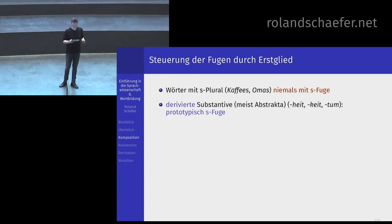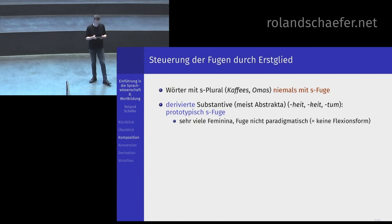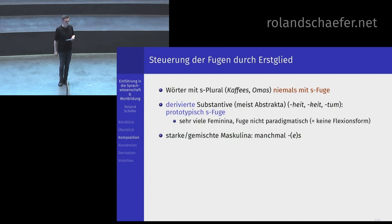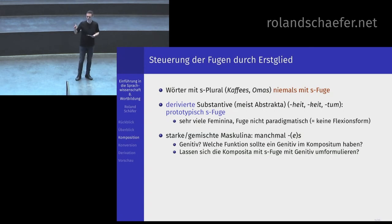Derivierte Substantive, meist solche Abstrakta auf -heit, -keit, -tum und so weiter, nehmen fast immer die S-Fuge. Das betrifft sehr viele Feminina, weil diese derivierten Abstrakta auf -heit und -keit Feminina sind. Da ist das S aber keine Flexionsform. Die starken und gemischten Maskuline und Neutra nehmen manchmal die S-Fuge – da könnte man sagen, das ist doch der Genitiv. Das können wir überprüfen, indem wir fragen, welche Funktion der Genitiv dann in diesem Kompositum genau haben soll, und diese Komposita zu Phrasen umformulieren, wo ein echter Genitiv vorkommt.